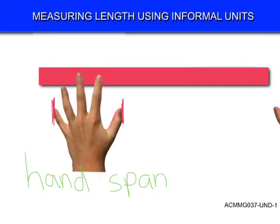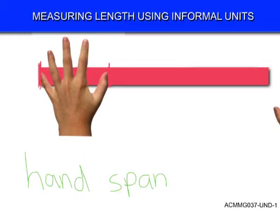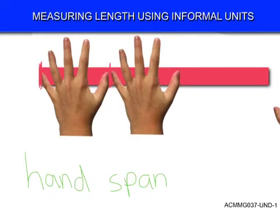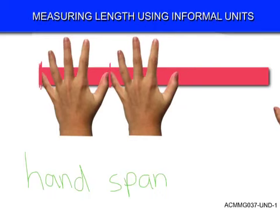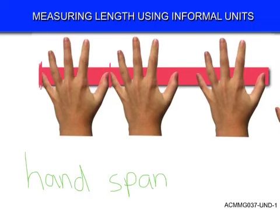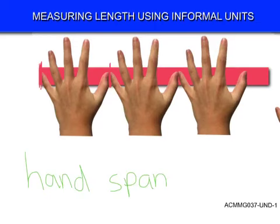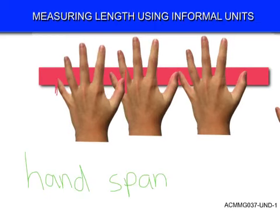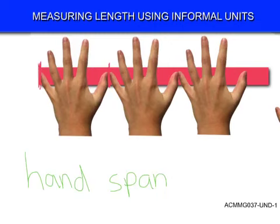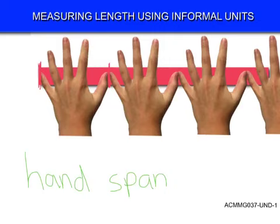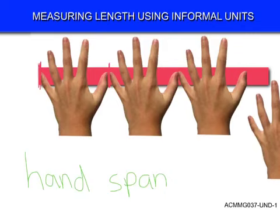Making sure that I put my pinky right on the end of this piece of wood, and then my next hand I do the same — I put the pinky next to my thumb and keep going. Obviously you don't have three hands, but you would take this hand and put it over here. You can see on this piece of wood I can't quite fit four hand spans, so it's just a little bit more than three hand spans. So if I was telling someone how long that piece of wood is, I could say it's just a bit more than three of my hand spans.